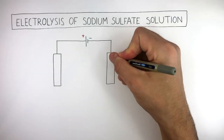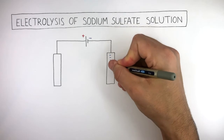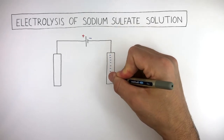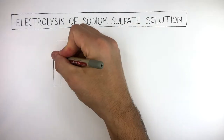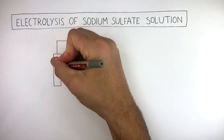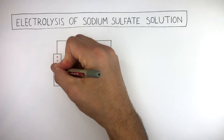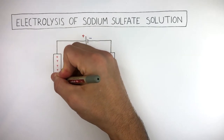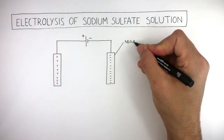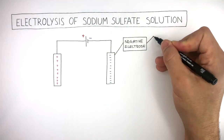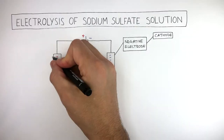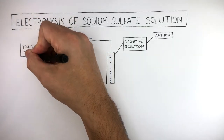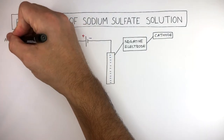Here I'm drawing negative signs to show how this is the negative electrode, and here I'm drawing positive signs to show how this is the positive electrode. The negative electrode is called the cathode, and the positive electrode is called the anode.